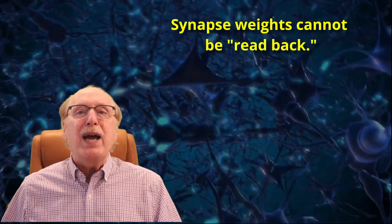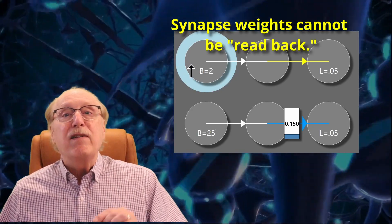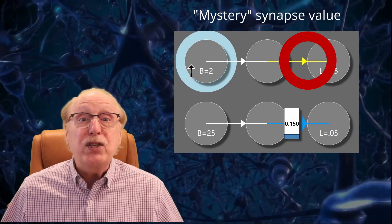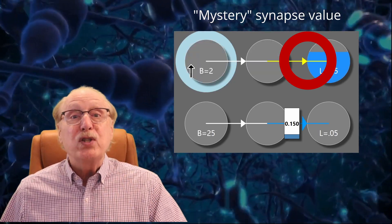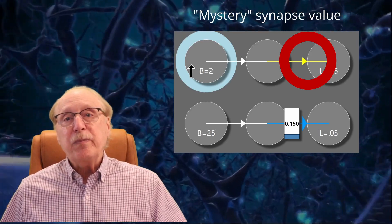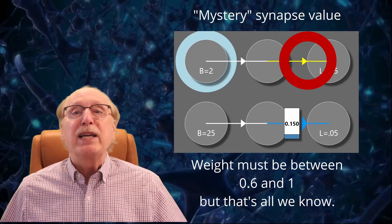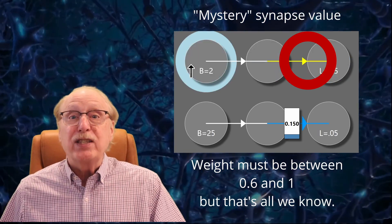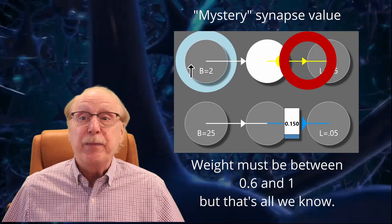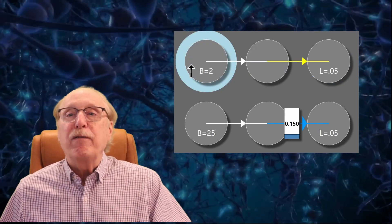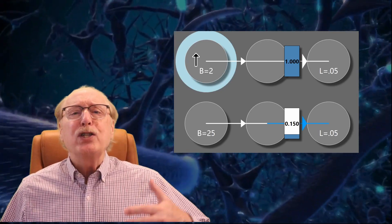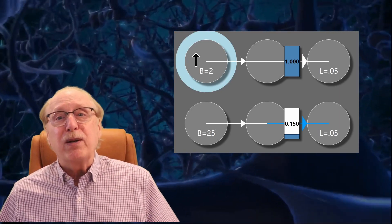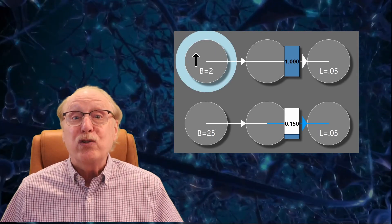Beyond being difficult to set with precision, synapse weights are essentially impossible for your brain to read back. Consider this. To learn the weight of an individual synapse, you fire the presynaptic neuron repeatedly until the postsynaptic neuron fires. So if it takes only two spikes to make the target neuron fire, the aggregate synapse weight must be between 0.6 and 1, depending on the leakage rate. But when that postsynaptic neuron fires, the synapse weight might change. Ouch, it's a bit like quantum particles where it's impossible to measure any value without disrupting the value you're trying to measure.